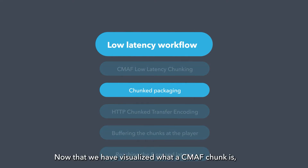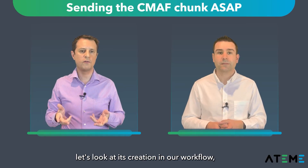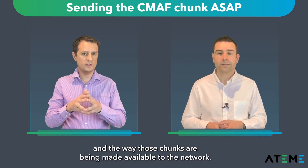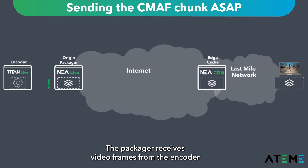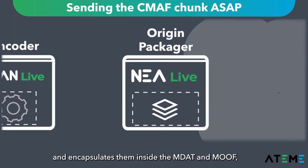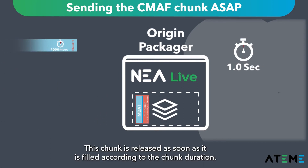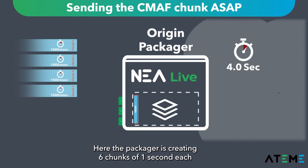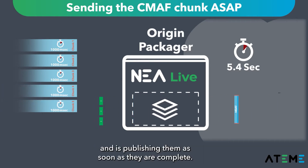Now that we have visualized what the CMAF chunk is, let's take a look at its creation in our workflow, especially around the packager and the way those chunks are being made available to the network. The packager receives the video frames from the encoder, and encapsulates them inside the MDAT and the MOF boxes, ultimately creating a CMAF chunk. This chunk is released as soon as it is filled according to the chunk duration, so here the packager is creating 6 chunks of 1 second each, and is publishing them as soon as they are completed.